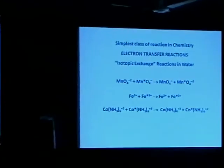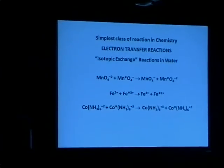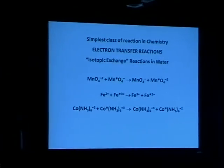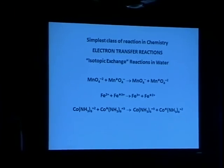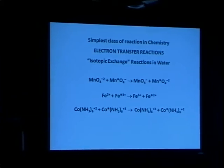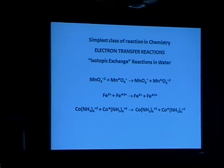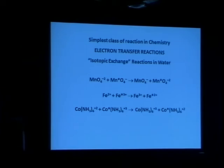This type of reaction was especially studied after the Second World War. Because these asterisks that you see here represent a radioactive atom — for example, a radioactive magnesium atom. Many chemists used radioactive atoms as tracers to study the sequence of steps that occur in a complex chemical reaction, but they are also used in this simple chemical reaction. So these are called isotopic exchange reactions.